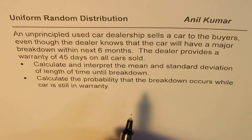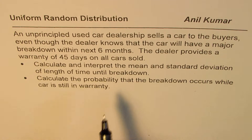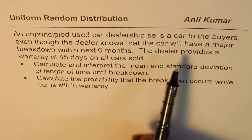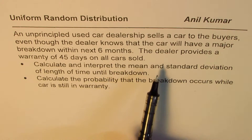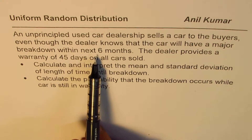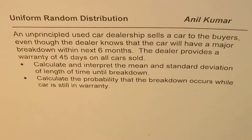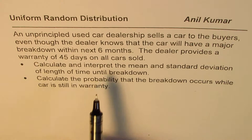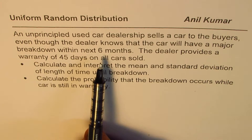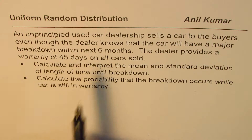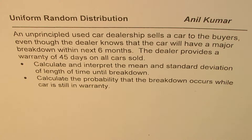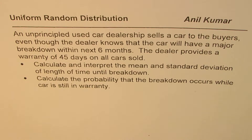In such cases like we have here, the car can break down any time within 6 months. Any time during this duration is equally probable for the car to break down, and therefore this is a case of uniform random distribution.